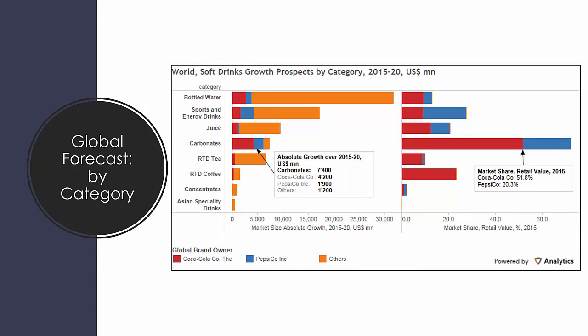Breaking down by category, bottled water is the major growth segment. Carbonates show modest growth — for reasons we'll return to later — though in absolute market share figures, carbonates are still way out ahead compared to other segments. If we're looking at growth and changes, bottled water and sports and energy drinks are the big movers expected in the coming years, in a global projection from 2015 to 2020.